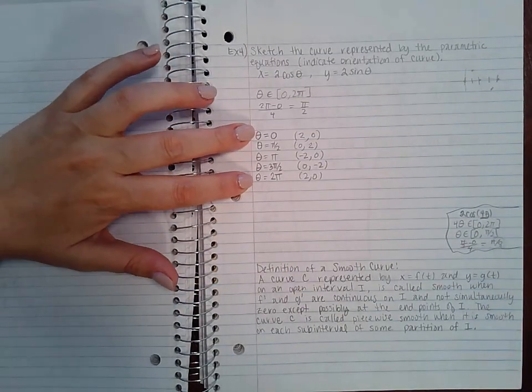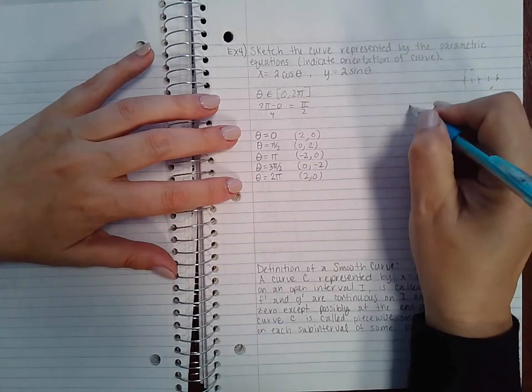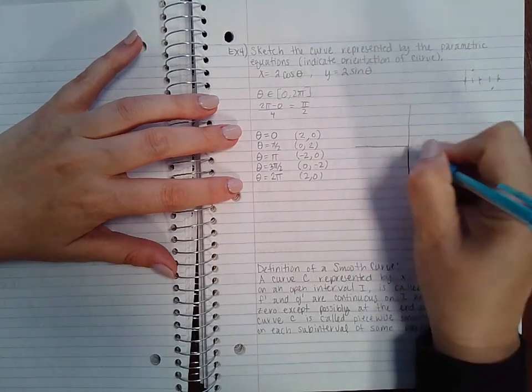And then for 2π I'm going to be back at two and zero, because these two guys have the same sine and cosine values. Okay, so let's graph this, because that's all I want us to do is graph this.